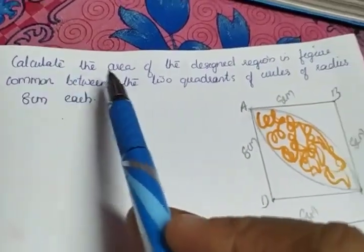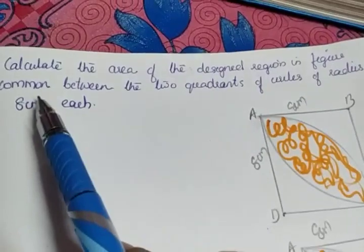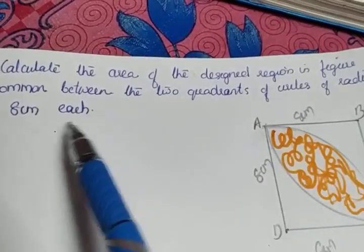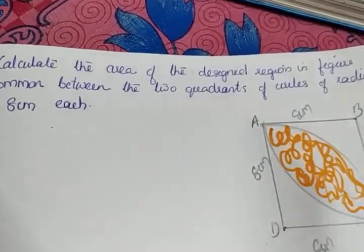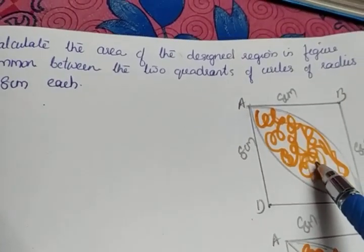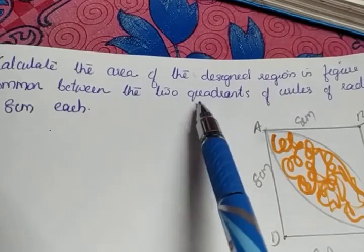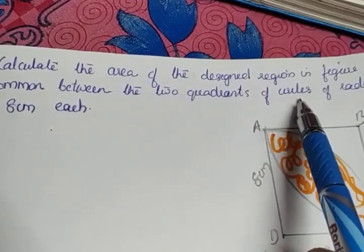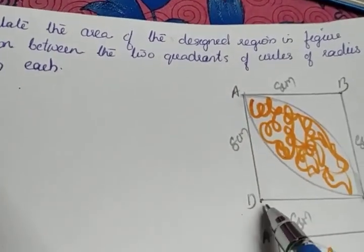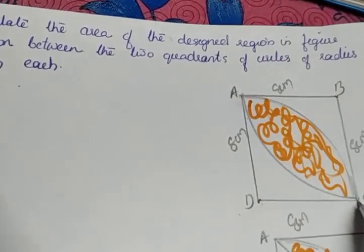The next question is: calculate the area of the designed region in the figure, common between two quadrants of circles of radius 8 cm each. We have to find the area of this shaded region. The radius is given — DC is the radius, DA is the radius — and it is given as 8 cm.